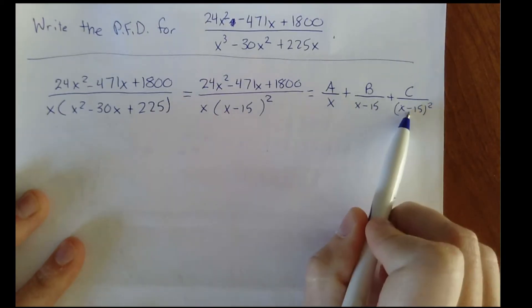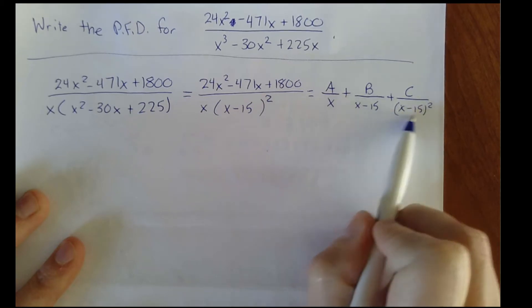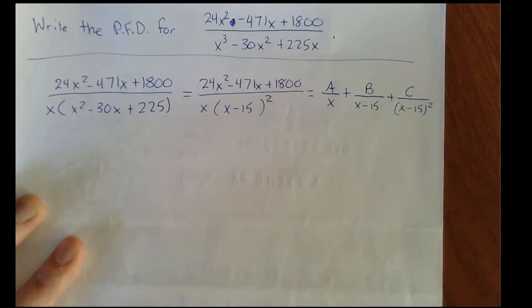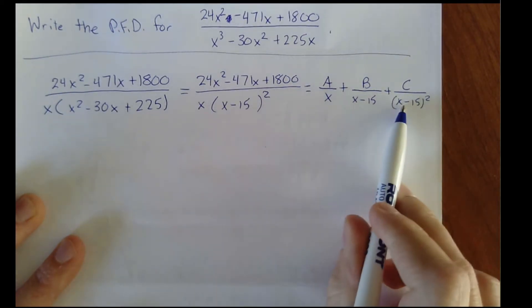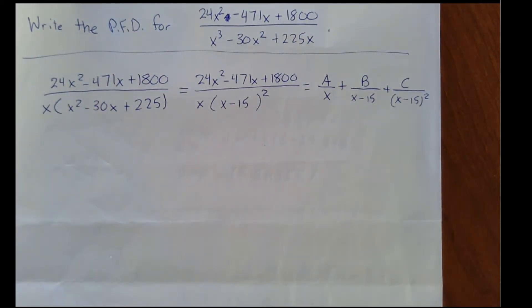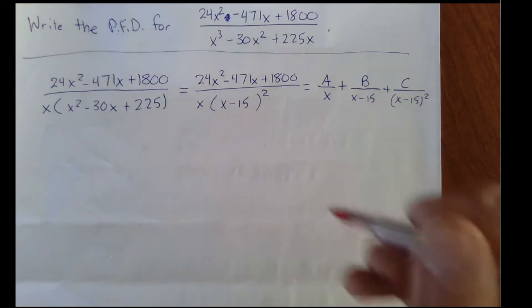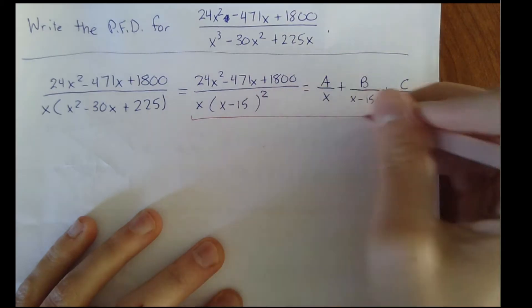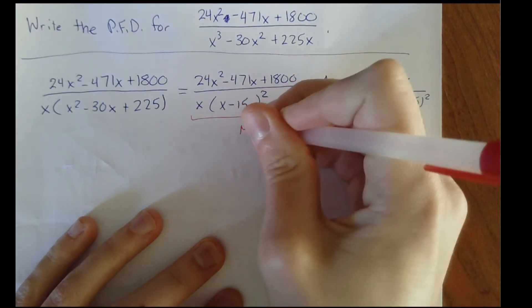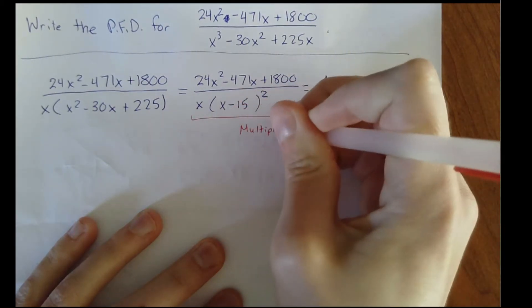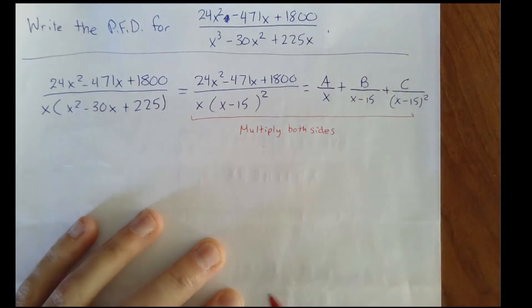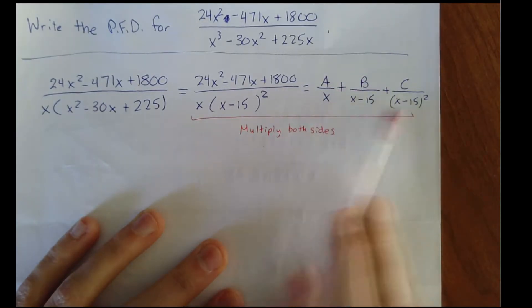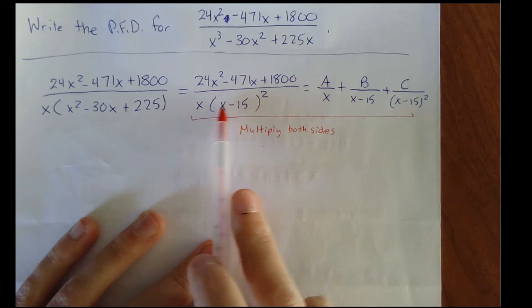Even this repeated factor is still a linear factor — even though we could multiply it out and write it as a quadratic, the factor itself is x minus 15, which is linear. Now we have the form. I'm going to multiply both sides by the least common denominator of all these fractions, which is x times x minus 15 squared.